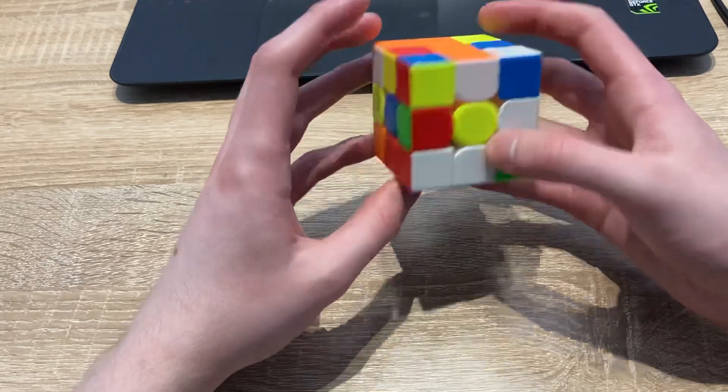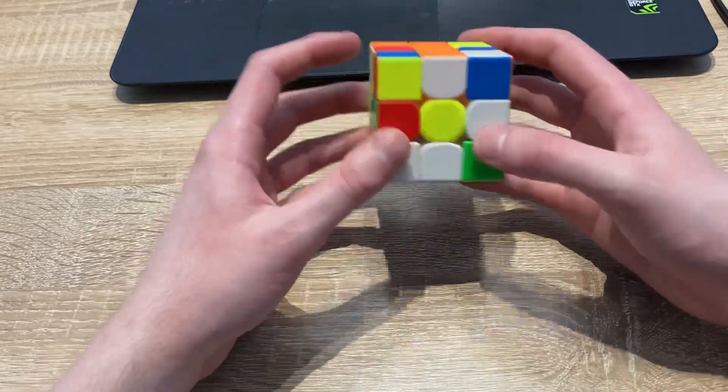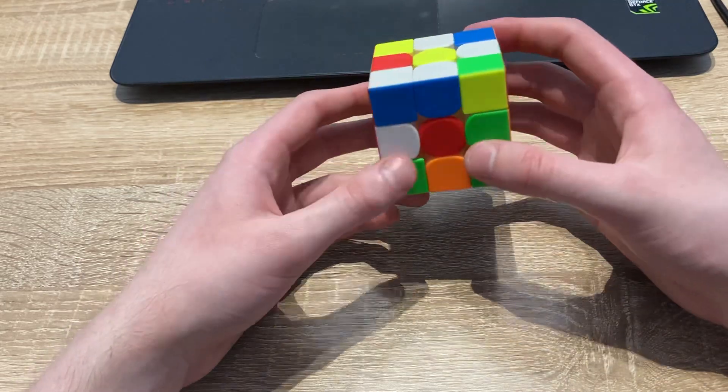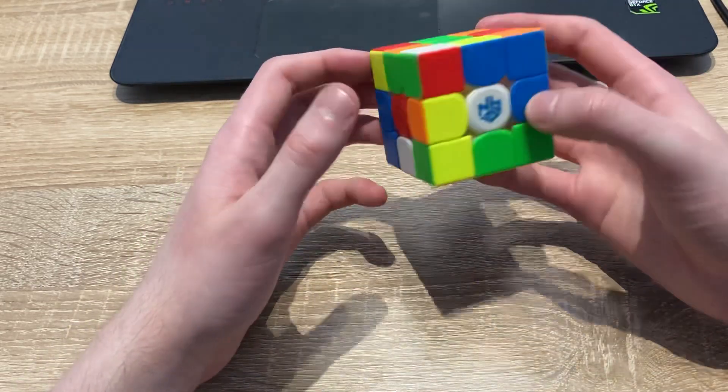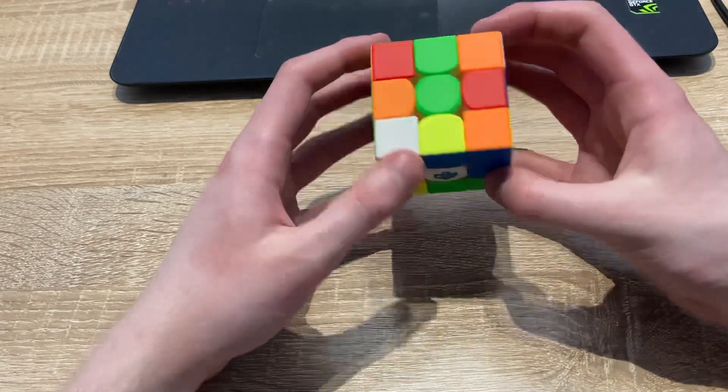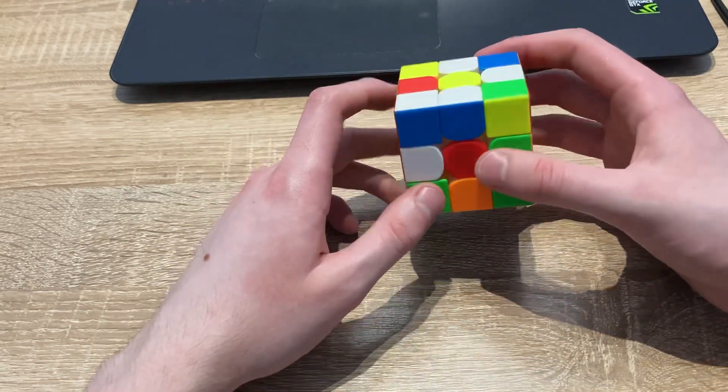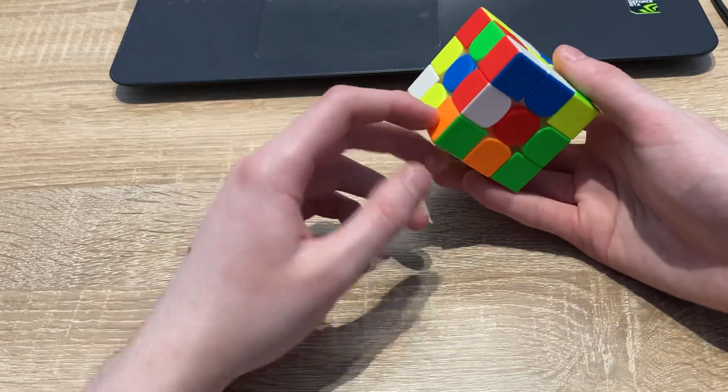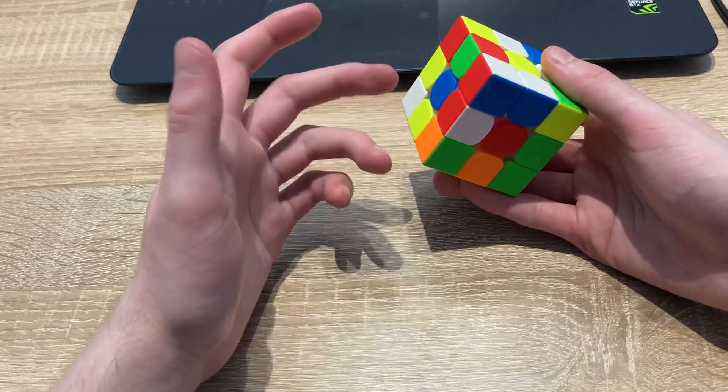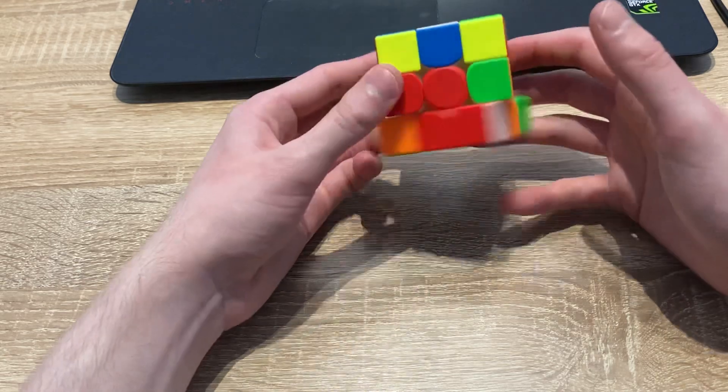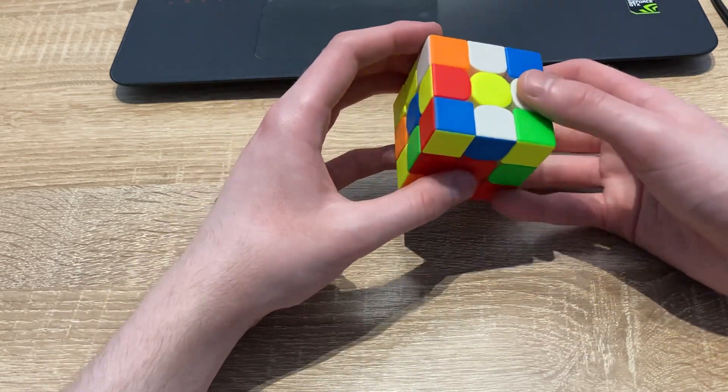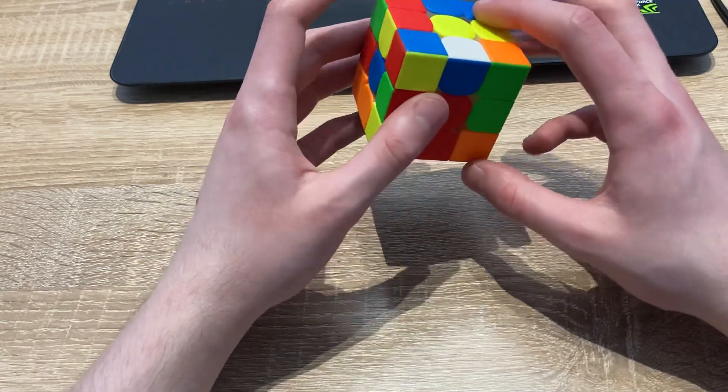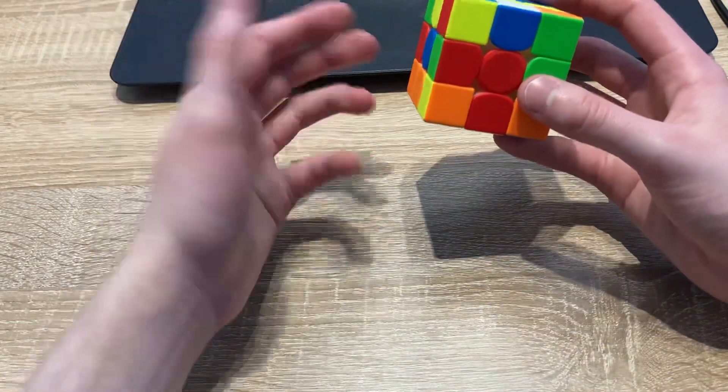So the first scramble is not the best. I would probably go for white here, so I would solve the cross like this. I would solve this red cross piece, then do a B2, R2.